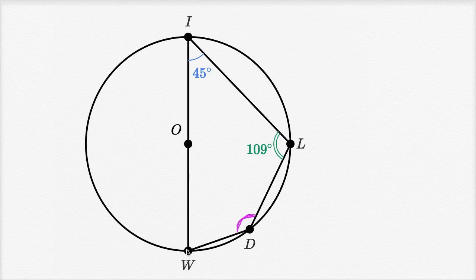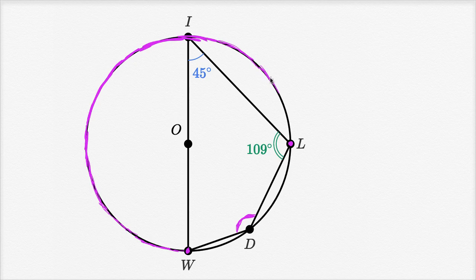So what do we know? Angle D intercepts an arc — this fairly large arc that I'm highlighting right now in purple. We don't know the measure of that arc yet, but if we did, then we know that the measure of angle D would just be half that, because the measure of an inscribed angle is half the measure of the arc that it intercepts. We've seen that multiple times. So if we knew the measure of this arc, we'd be able to figure out angle D.